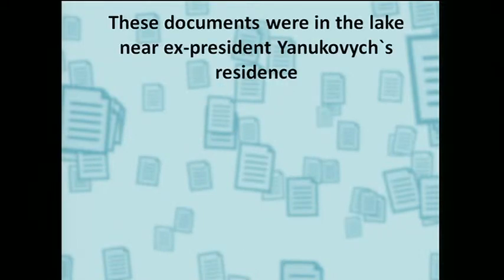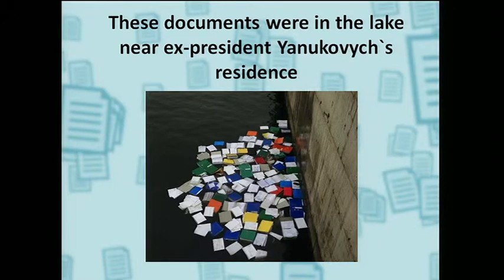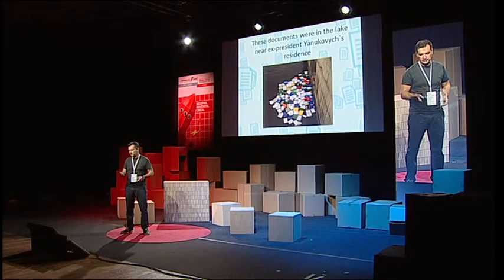These documents were first found in the lake near ex-president Yanukovych's residence. That residence has a name that's a little complicated for Italian or English speakers — it's called Mezhyhirya. You can see this photo taken at Mezhyhirya on the 23rd of February. This is part of the floating documents that Yanukovych's assistants, after his escape from Ukraine, tried to sink in the Kyiv lake near his residence.